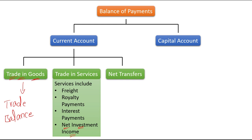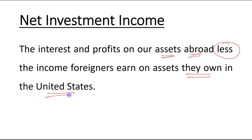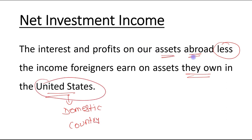Net investment income refers to the interest and profits on our assets abroad, less the income which foreigners earn on the assets they own in the United States — the domestic country in our case. So basically, it is the interest and profits on US assets abroad less the income foreigners earn on assets they own in the United States.